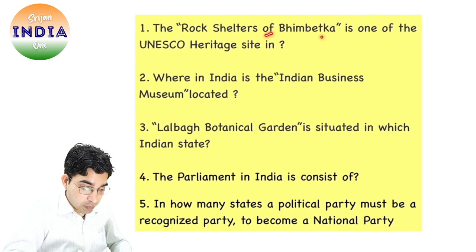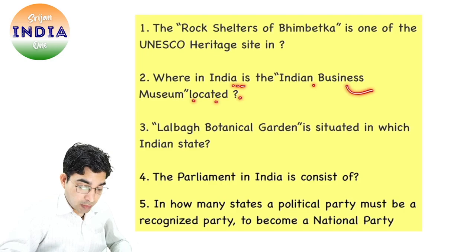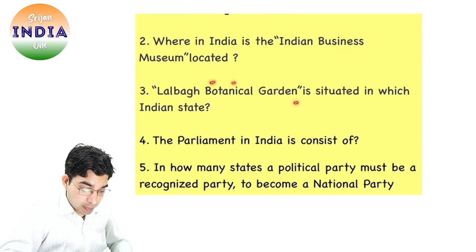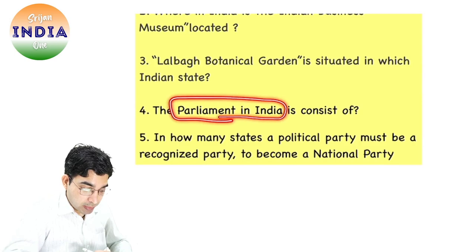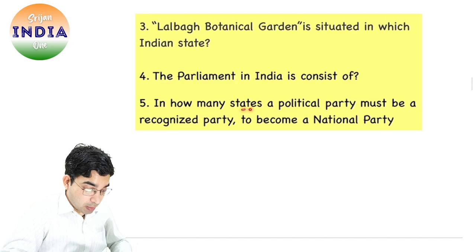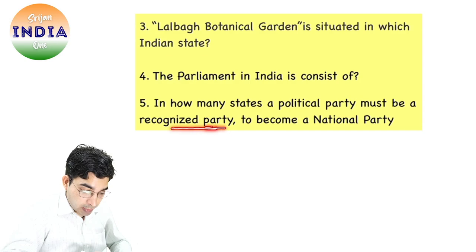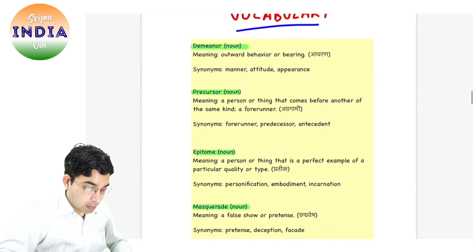आज के सवाल हैं: The rock shelters of Bhimbetka is one of the UNESCO heritage sites — in which state of India? Where in India is the Indian Business Museum located? Lalbagh Botanical Garden is situated in which Indian state? Parliament in India — इसमें क्या-क्या included होता है, consist of what? In how many states must a political party be recognized so that it becomes a national party? So ये 5 सवाल हैं आज के लिए.